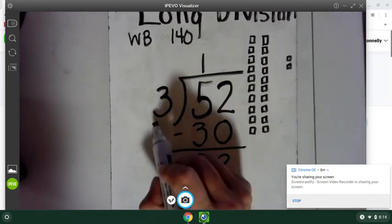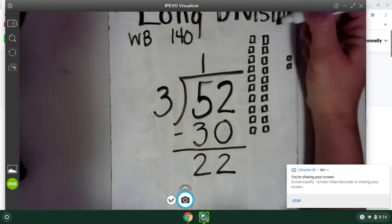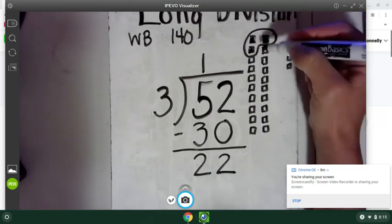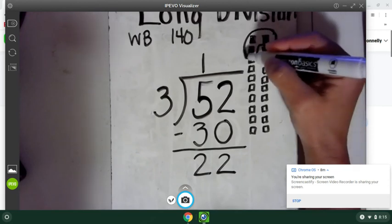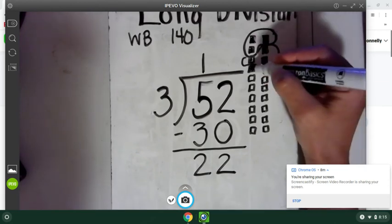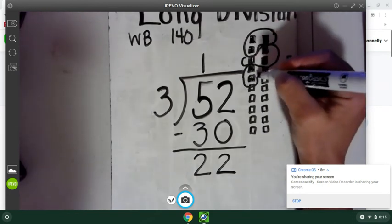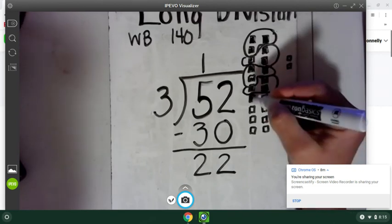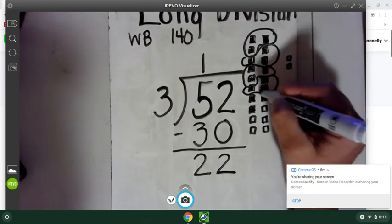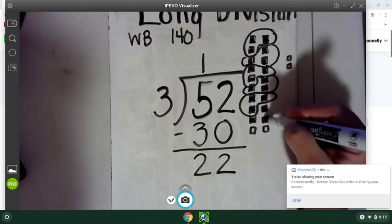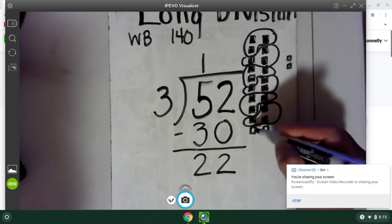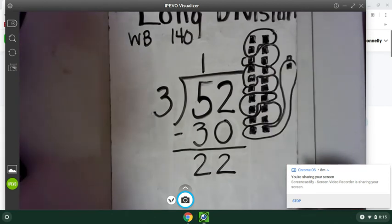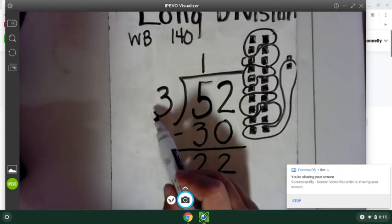So now if I have 22, it wants us to know, can I make groups of three? I sure can. Here's one. Here's two. Three. Four. Five. Six. And seven. Now, I show you it this way, but you can just count by threes until you get close.